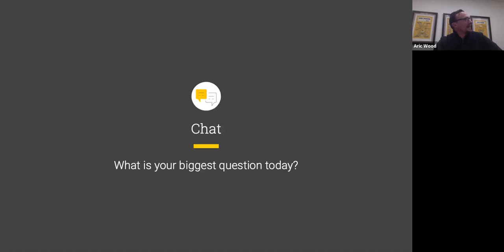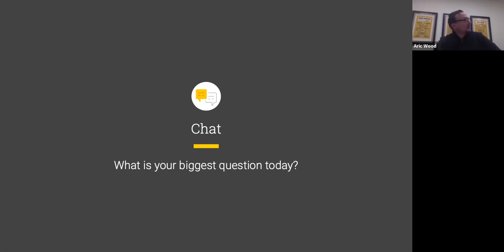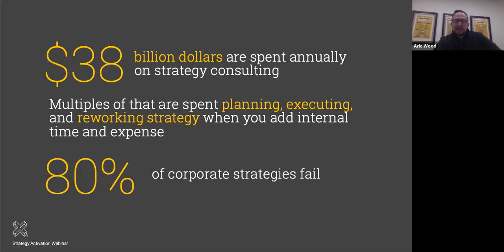Some great questions coming in: 'How to design and implement a lasting group dynamic' — we'll definitely talk about how to make it stick. 'How do you activate small strategies across larger enterprise strategies' — nesting those together is critical. 'How does culture inform strategy' — the key message is that strategy is a function of how we get human beings to coordinate, so we'll talk a lot about culture. My team will be assembling these and building them into the Q&A.